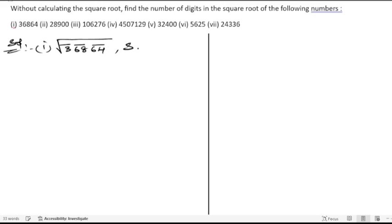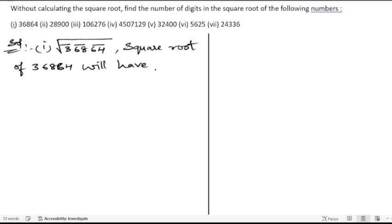The square root of 36864 will have three digits, because there are three bars.